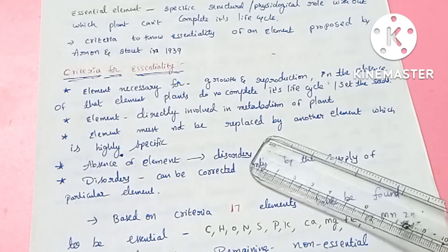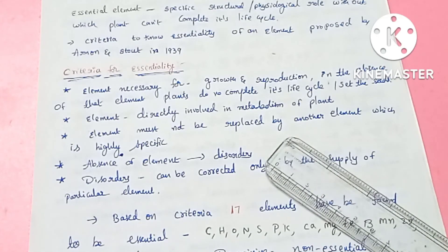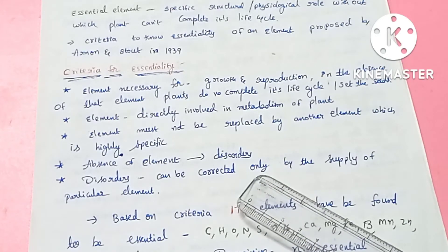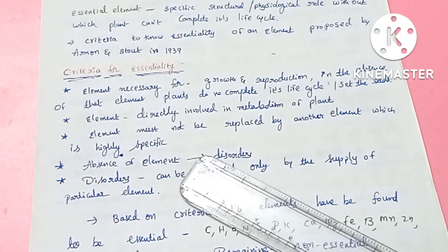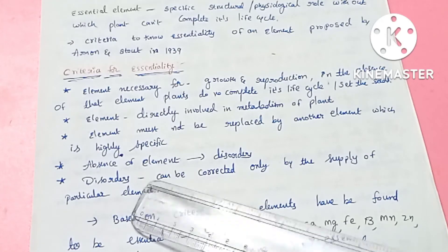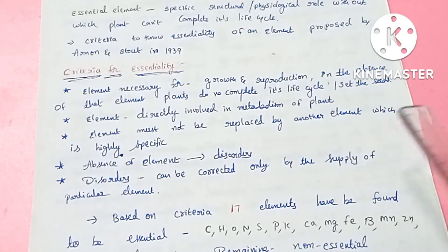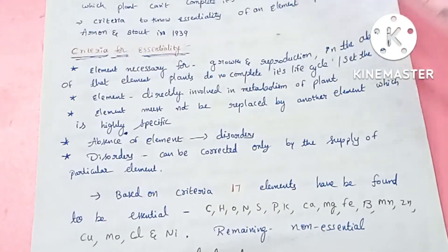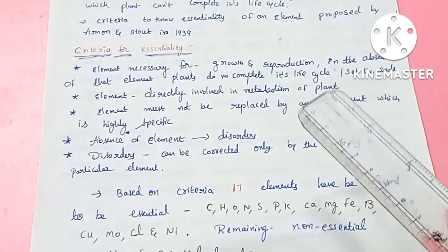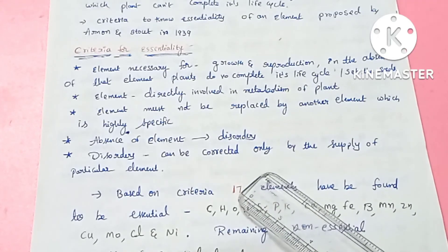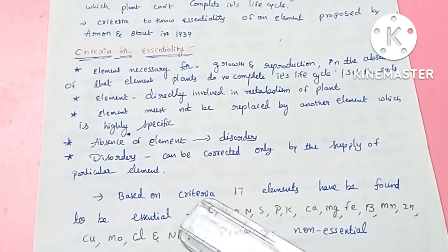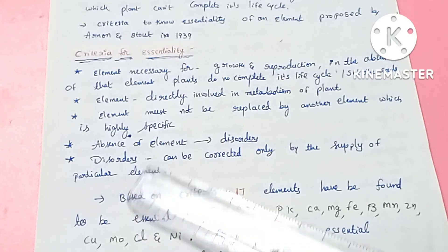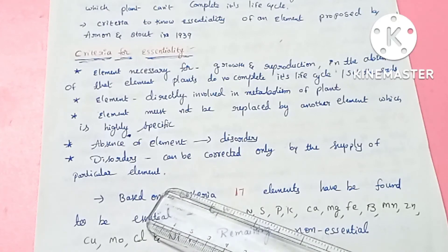The plant must not be able to replace the essential element with another element — they are highly specific. The absence of essential elements causes deficiency disorders. If an element is not supplied to the plant, it will show deficiency symptoms, similar to how vitamin deficiency causes hair fall and other problems in humans. These disorders can be corrected only by the supply of that particular essential element.